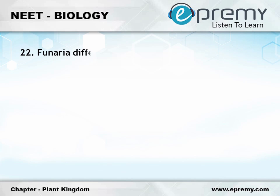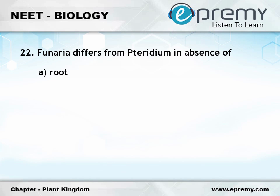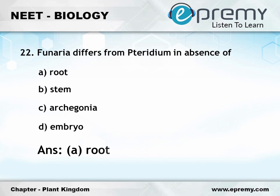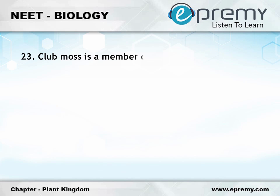Question number twenty-two: Todea differs from Pteridium in absence of option A root, option B stem, option C archegonia, option D embryo. The answer is option A root.